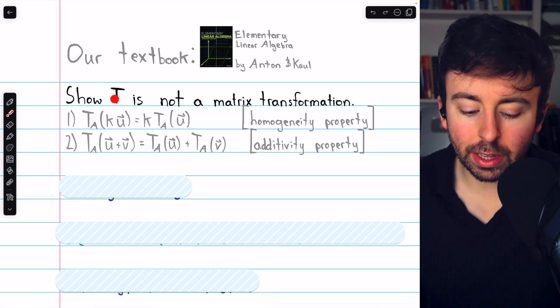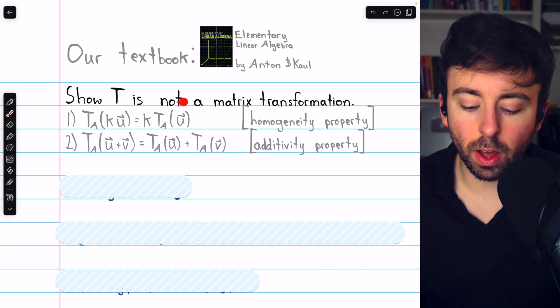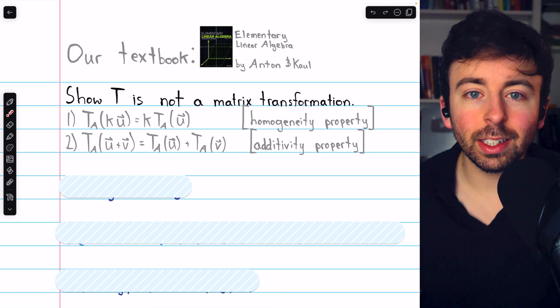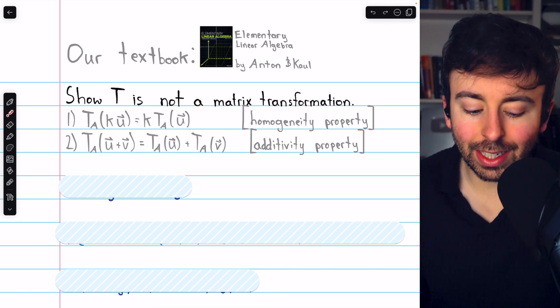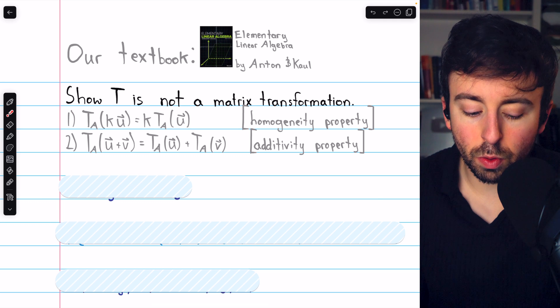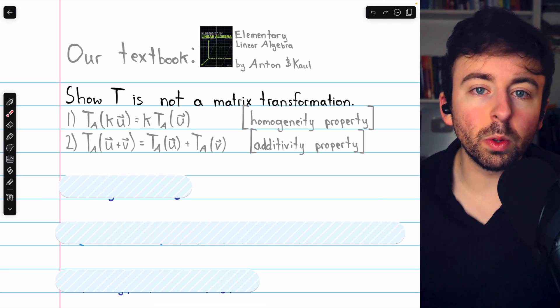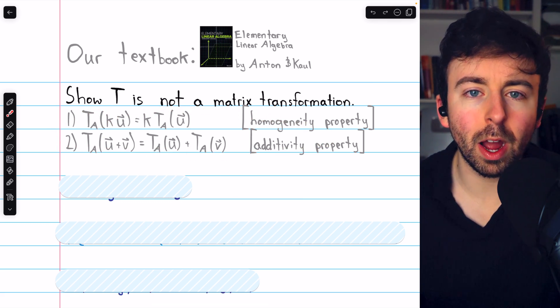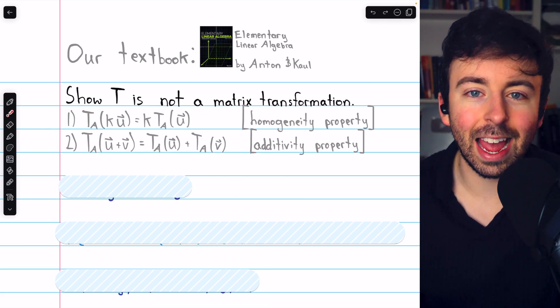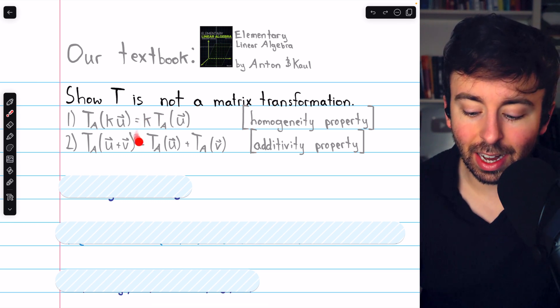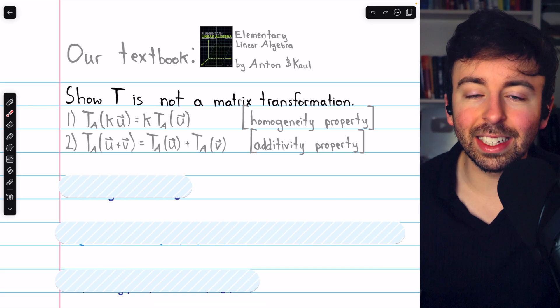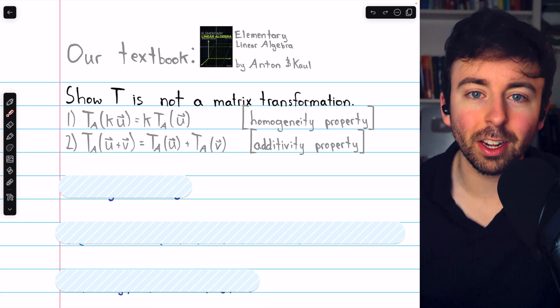Let's do two examples of showing that a given transformation is not a matrix transformation. We will do this by showing the given transformation violates either of these two properties. When we introduced matrix and linear transformations, we saw that these were the two most important properties for such a transformation to have. And if a transformation doesn't have these two properties, then it's not a matrix transformation.